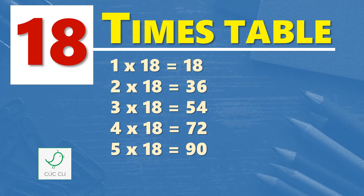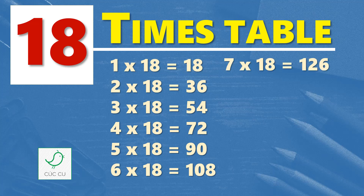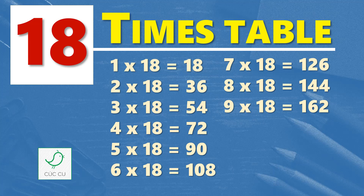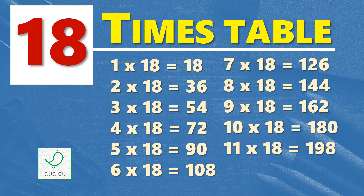Five times eighteen are ninety, six times eighteen are one hundred and eight, seven times eighteen are one hundred and twenty-six, eight times eighteen are one hundred and forty-four, nine times eighteen are one hundred and sixty-two, ten times eighteen are one hundred and eighty, eleven times eighteen are one hundred and ninety-eight, twelve times eighteen are two hundred and sixteen.